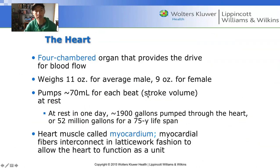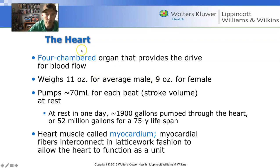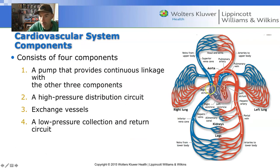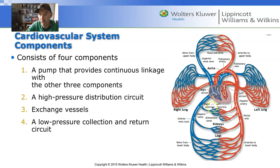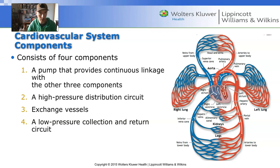The heart has four chambers. The two upper chambers are called atria — the right atrium and left atrium. The two lower chambers are the ventricles — the right ventricle and left ventricle. Each side of the heart has two chambers: an upper atrium and a lower ventricle.